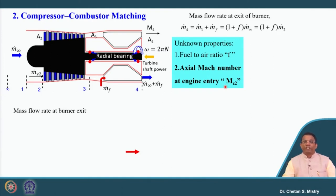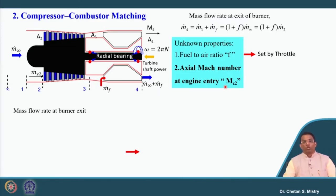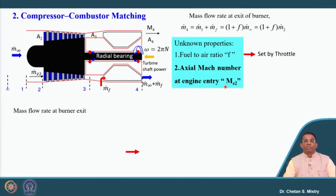Let us understand what we mean by the fuel-air ratio. Basically, this fuel-air ratio can be represented by the throttle. In conventional language, if we consider a two-wheeler or four-wheeler, in order to accelerate your vehicle you do throttling — pressing the accelerator paddle. What this does is let the fuel get injected inside the cylinder for an IC engine. Similarly here, in order to inject fuel in the combustion chamber we call that process throttling.